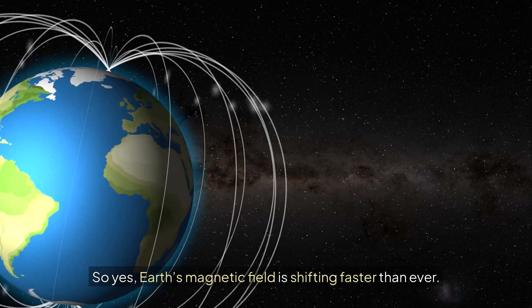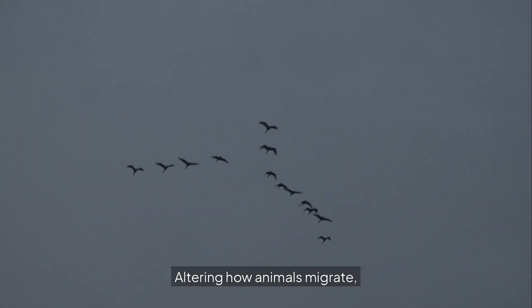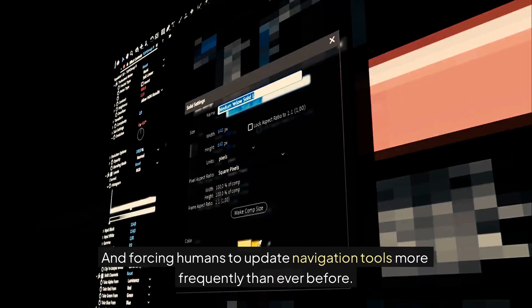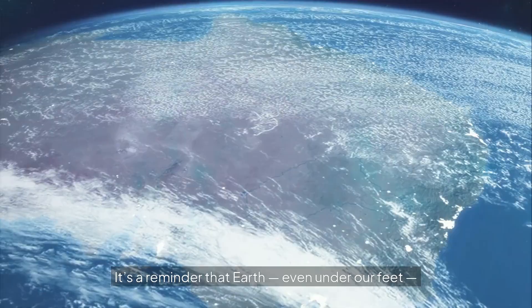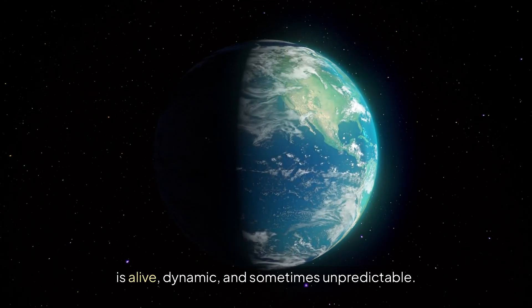So yes, Earth's magnetic field is shifting faster than ever. It's pulling compasses off course, altering how animals migrate, and forcing humans to update navigation tools more frequently than ever before. It's a reminder that Earth, even under our feet, is alive, dynamic, and sometimes unpredictable.